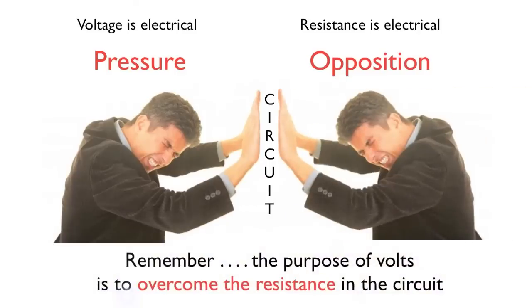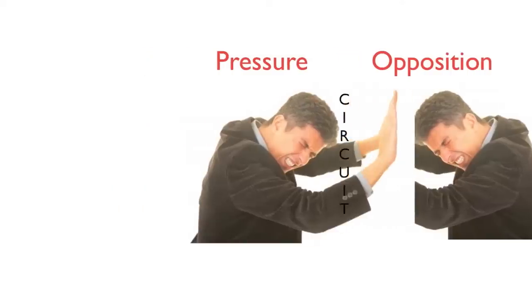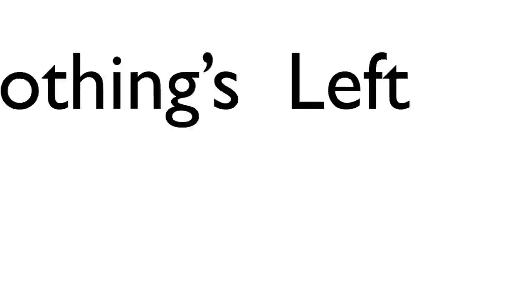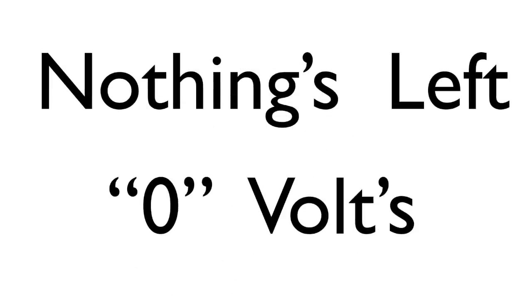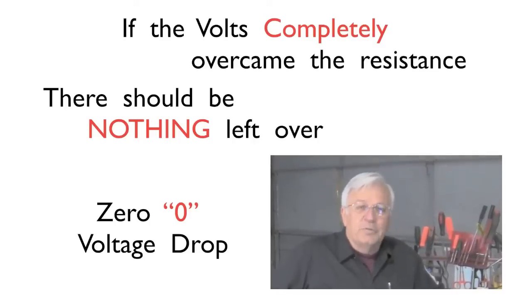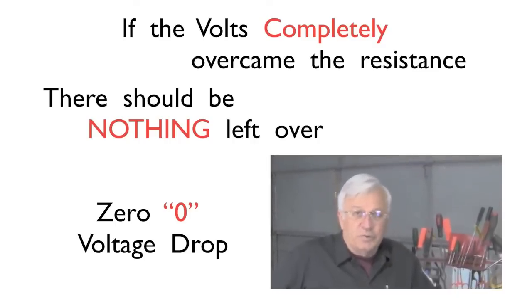Now remember, the purpose of volts is to overcome the resistance in the circuit. Now, once that pressure does overcome the opposition, nothing's left. We have zero volts. If the volts completely overcame the resistance, there should be nothing left over.